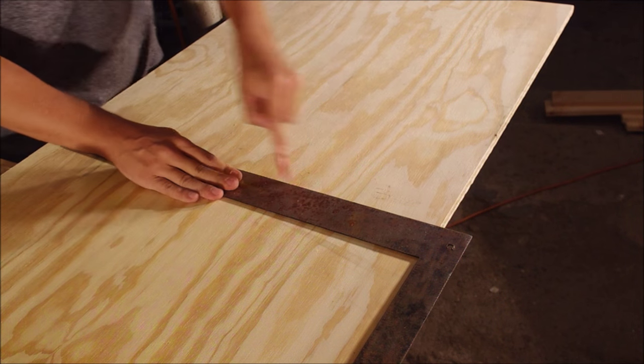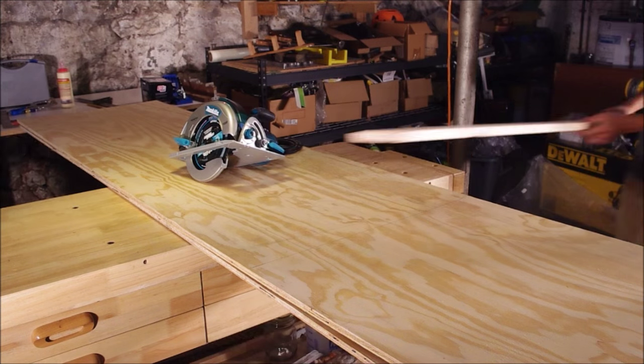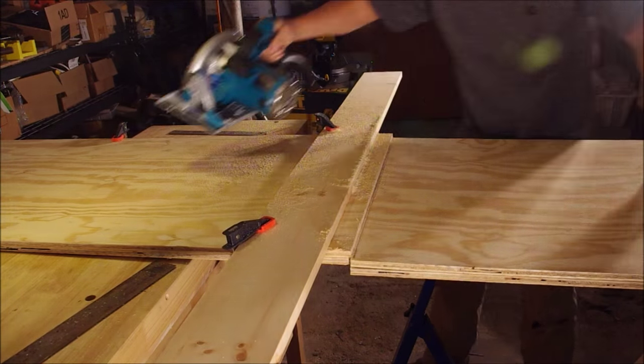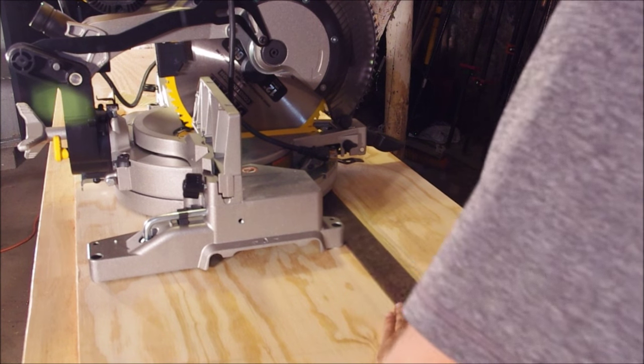Mark your plywood at six feet and make the cut. I like to set up a fence when I'm using a circular saw and square it off. Makes things a little bit easier.